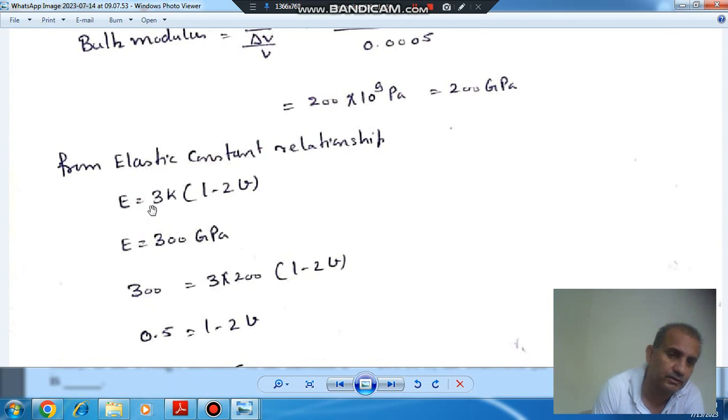And using the elastic constant relationship, E equals 3K times (1 minus 2μ). We have bulk modulus and E is 300 GPa, that is given.